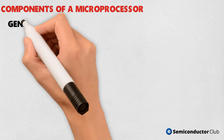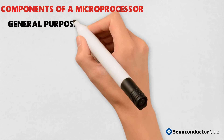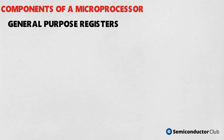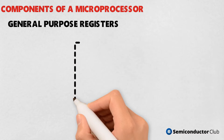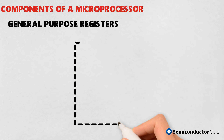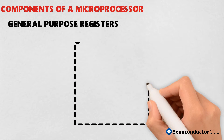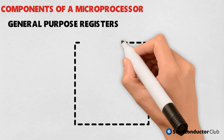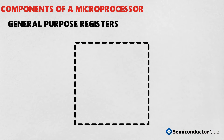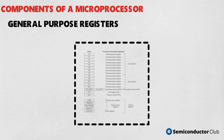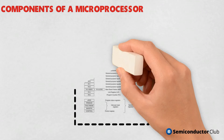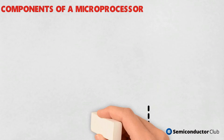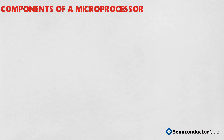General-purpose registers. The 8085 microprocessor contains six 8-bit general-purpose registers: B, D, C, E, H and L. To hold 16-bit data, a combination of two 8-bit registers can be employed. The combination of two 8-bit registers is called a register pair. The valid register pairs in the 8085 are D-E, B-C, and H-L. The HL pair is used to act as a memory pointer.